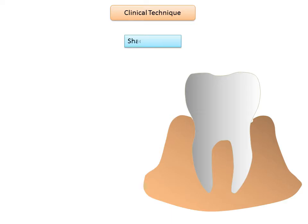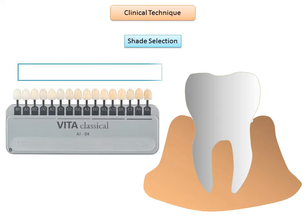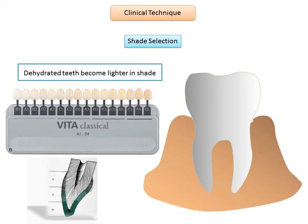The next step is shade selection. Although it is not as important for posterior compared to more visible anterior restorations, proper shade selection should be accomplished for all direct composite restorations. Use shade guides; different manufacturers provide their own shade guide. The shade must be selected before drying the teeth because drying makes the teeth lighten due to loss of translucency secondary to water loss from the naturally porous tooth structure.